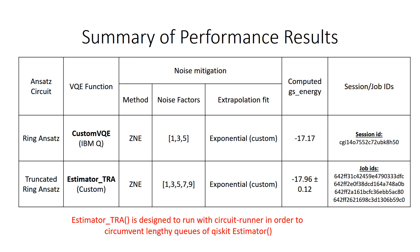By contrast, the truncated ring ansatz was run with a custom estimator TRA function that is specifically designed to run with the circuit runner in order to circumvent lengthy queues of the Qiskit estimator. That was able to achieve minus 17.96 value of the ground state energy, which is within 1% relative error, and the corresponding row shows the corresponding job ID for your reference.